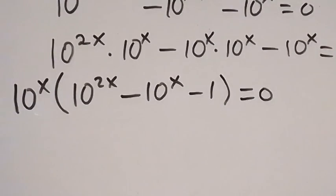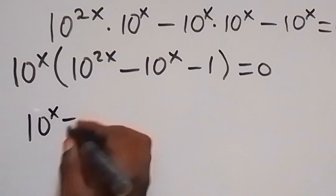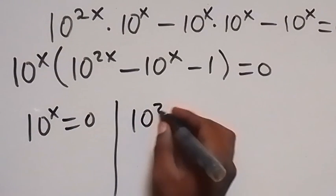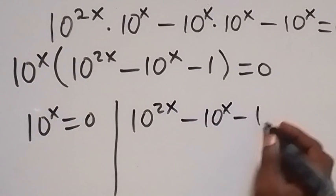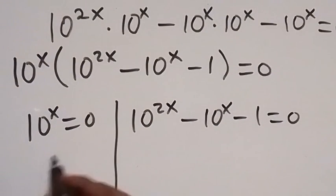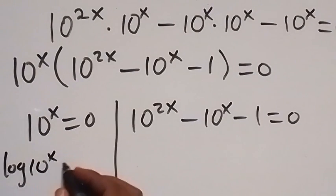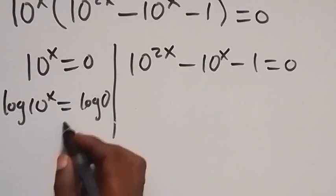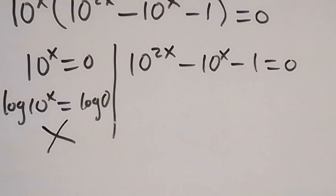This equals to zero, or we have 10 raised to power 2x minus 10 raised to power x minus 1 equals to zero. From here, when we take the log on both sides, we have log of 10 raised to power x equals to log zero. But log zero is undefined, so there is no solution on this side.